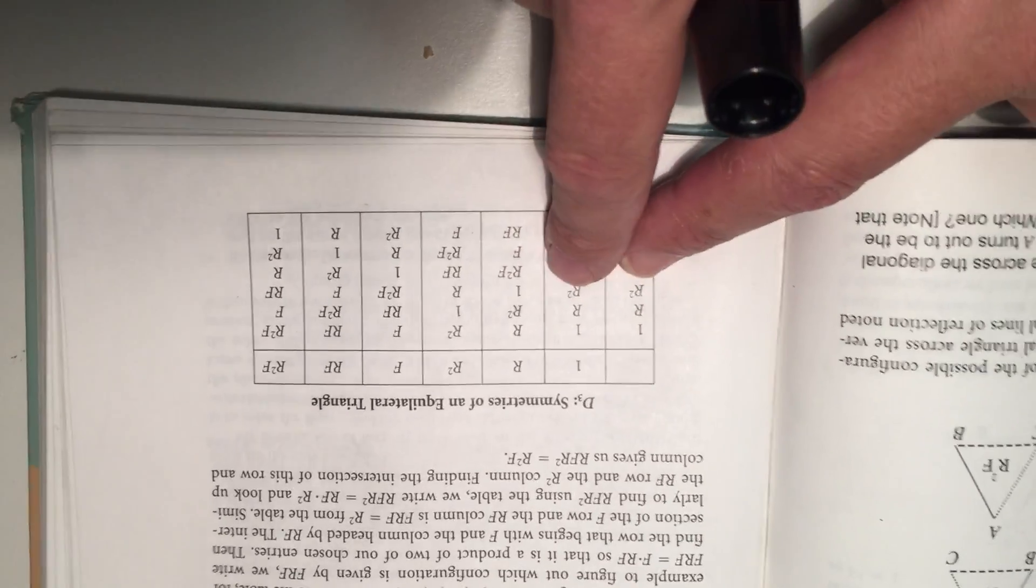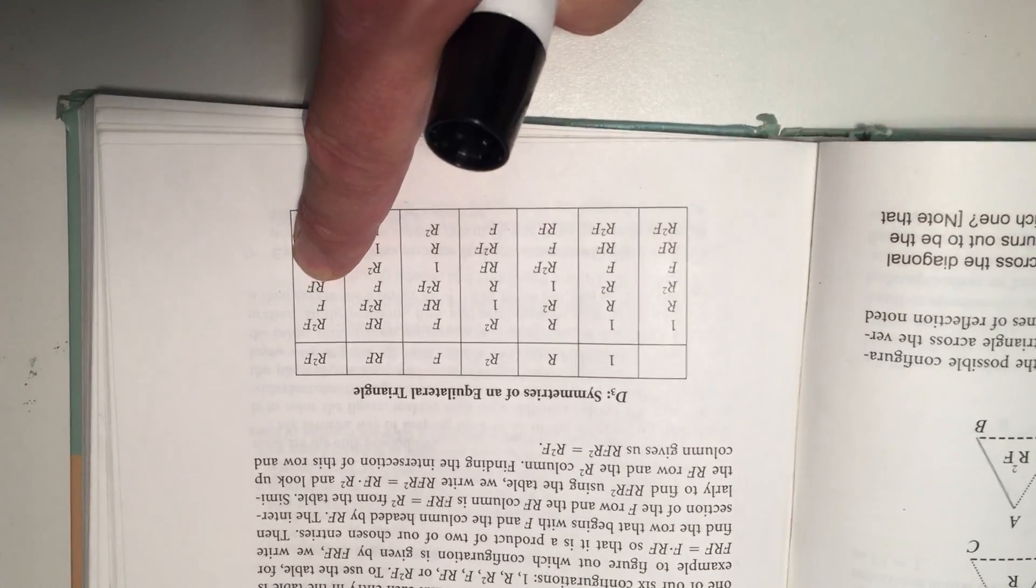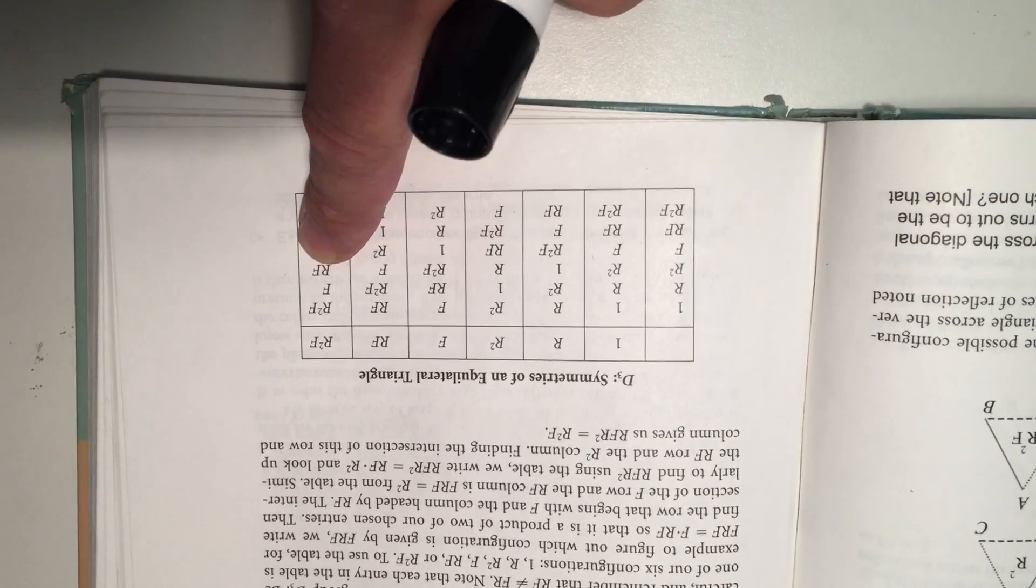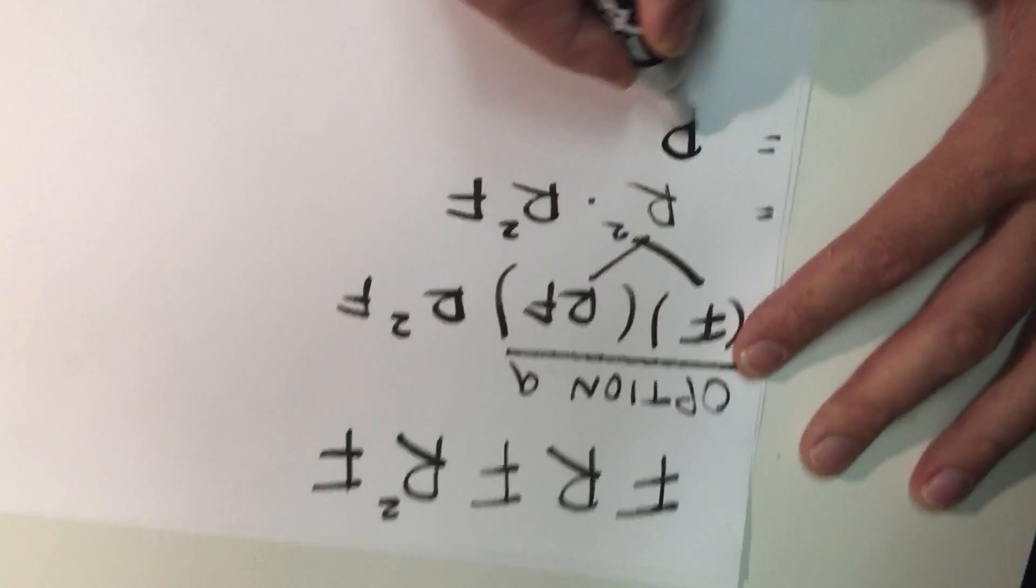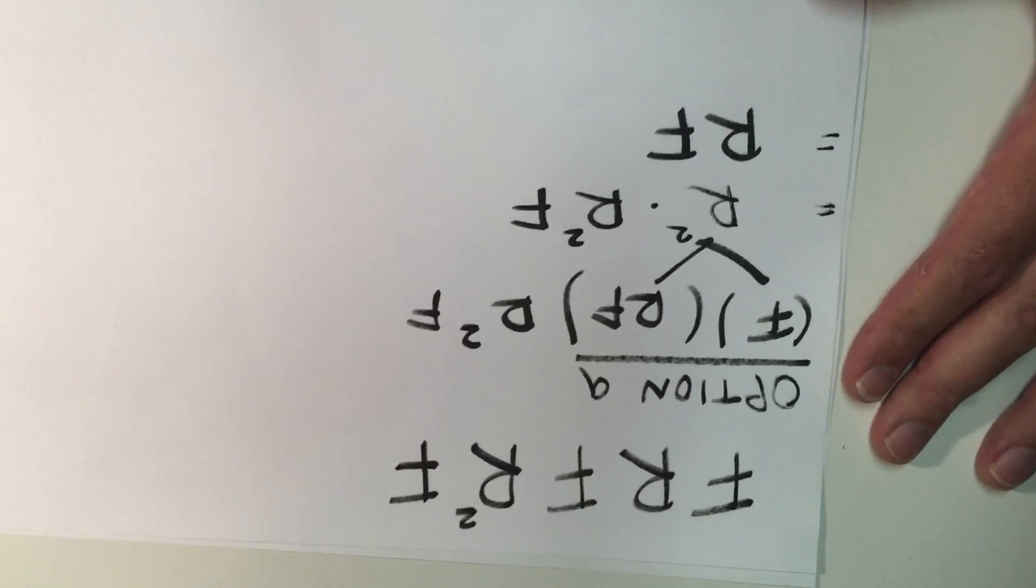So then I'm going to combine R squared with R squared F and the result, the product if you will, is RF. So that was that.